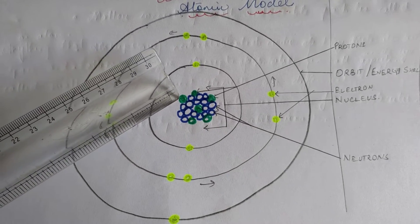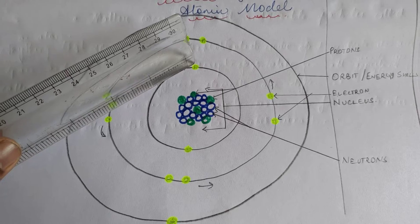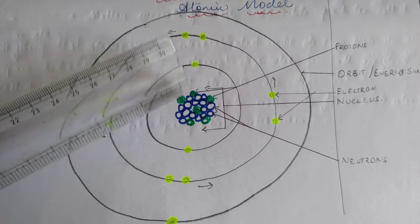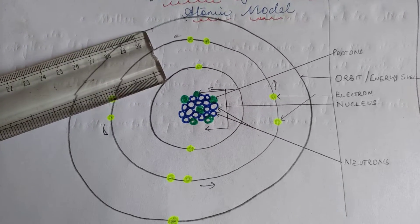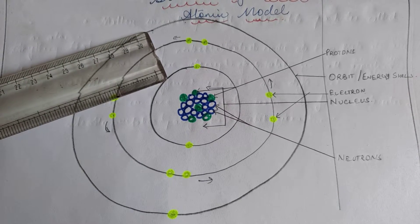The protons present inside the nucleus are positively charged. Electrons revolving in their orbit are negatively charged. Now the number of protons and number of electrons in a neutral atom will always remain the same. That means number of electrons is equal to number of protons.